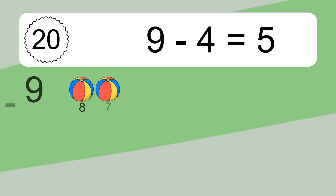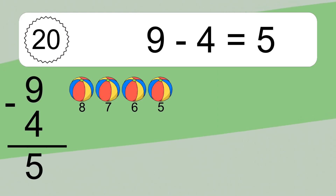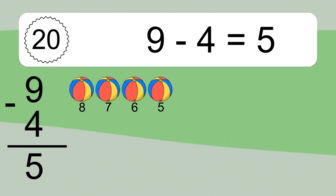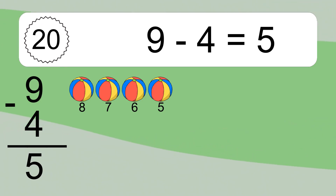9 minus 4 equals 5. Let's count it: 8, 7, 6, 5.